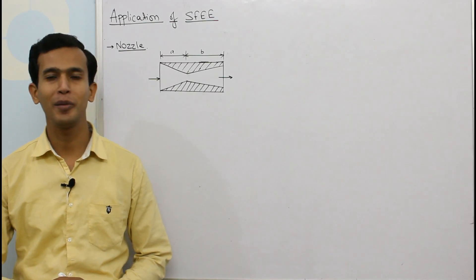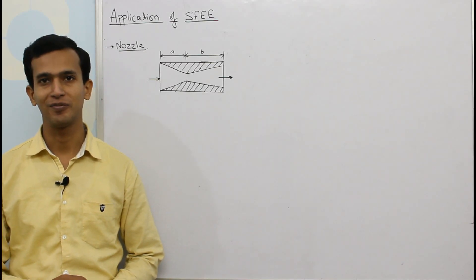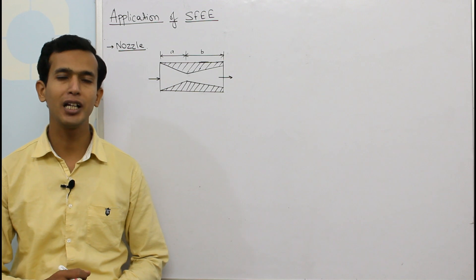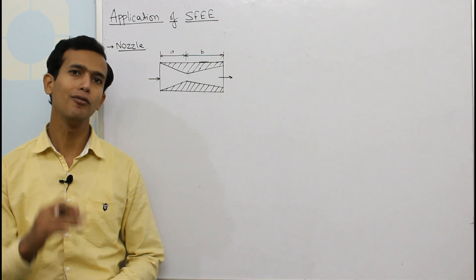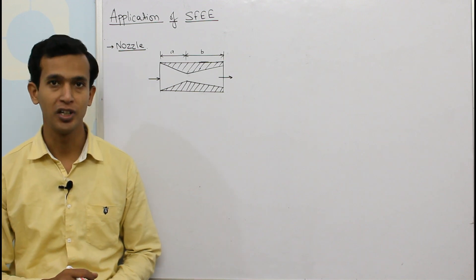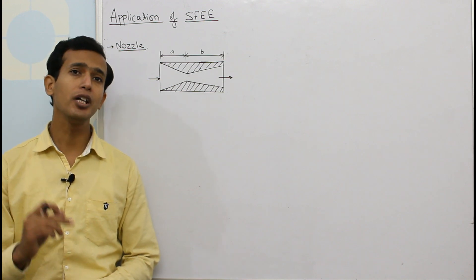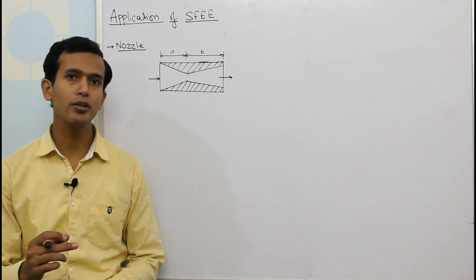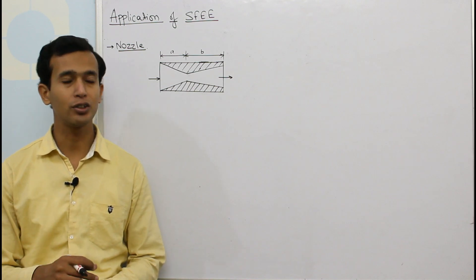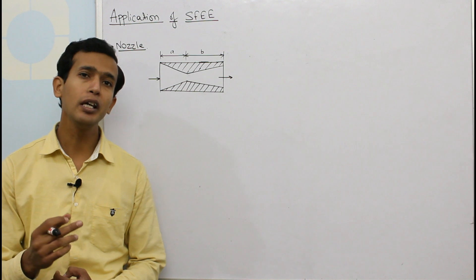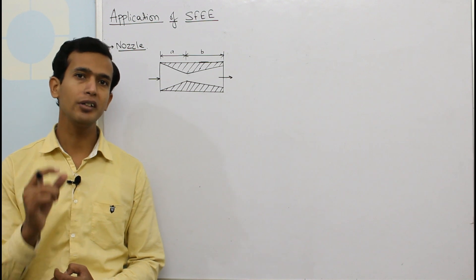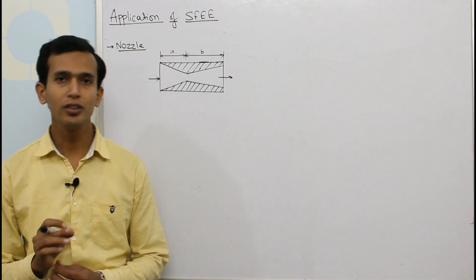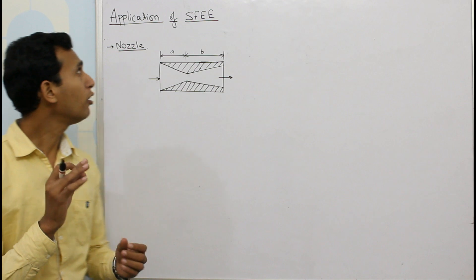Hi, welcome to All About Mechanical Engineering. As we have seen in the previous video, we have derived the general form of the steady flow energy equation. Now in today's video, we will apply the same equation for a device called a nozzle and we'll see what the steady flow energy equation is for this device.